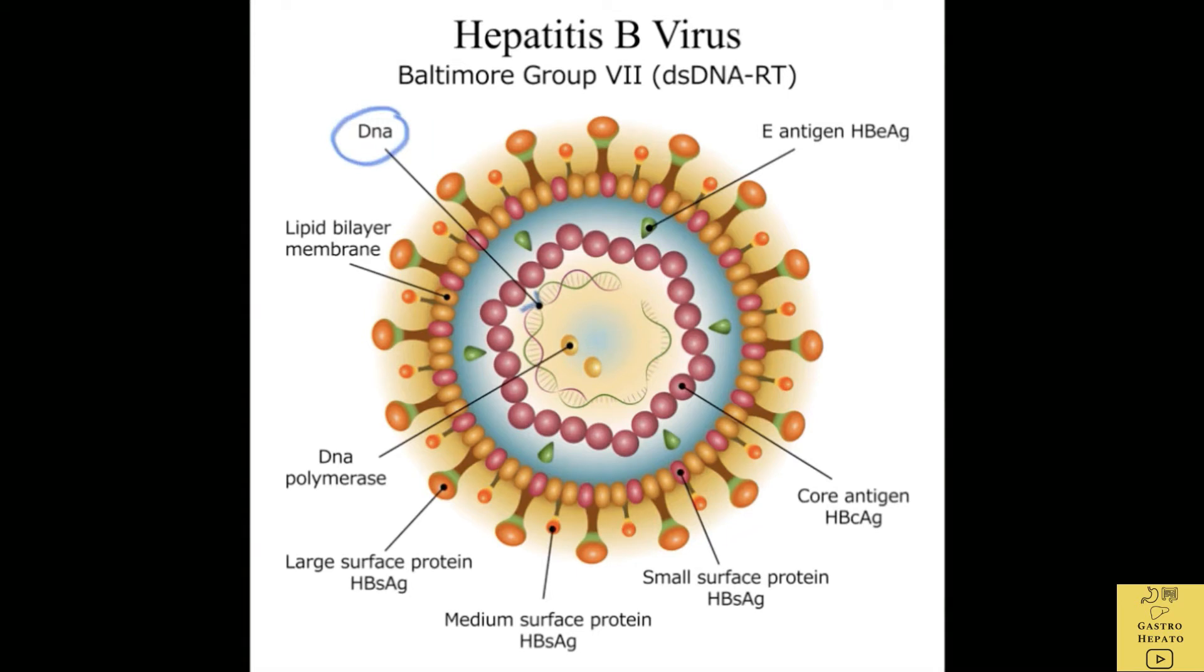The second aspect of the virus that we will discuss is the E antigen or HBeAg which is located in the inner core of the virus. The third thing we will discuss is the HBsAg which is located in the outer part of the virus.